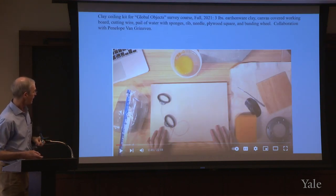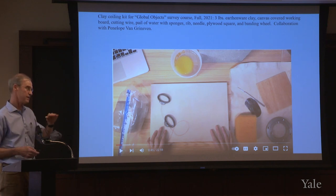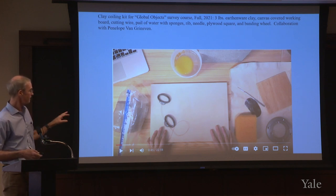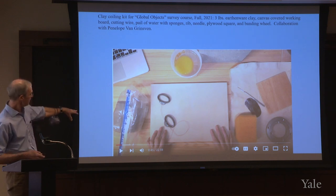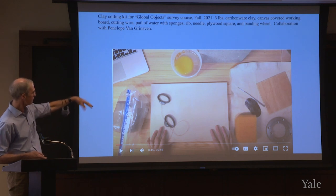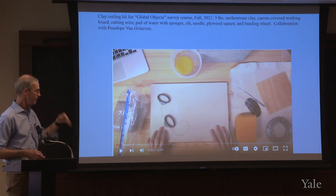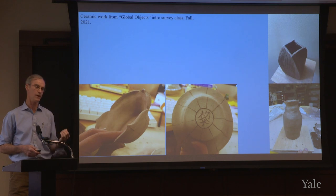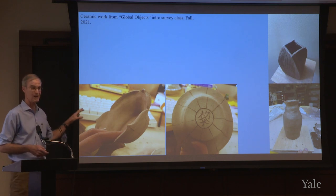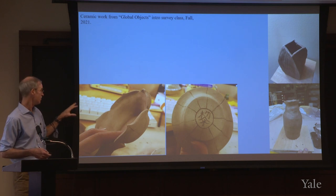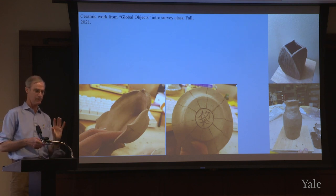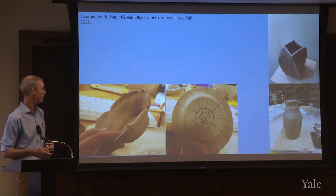More recently for undergraduates, I've worked with Penelope von Grinsven, who has responsibility for five undergraduate pottery studios, to develop a kit for coil building. It has a folding board with canvas, a cutting wire, two and a half to three pounds of clay, a bucket with a sponge, a needle tool, a rib — everything you need to make objects. These are not thrown on a wheel; they're all coiled or slab construction. Undergraduates this past fall semester made these sorts of things, just given clay and a bending wheel like a lazy Susan to get a sense of what's possible.